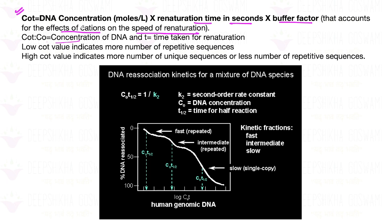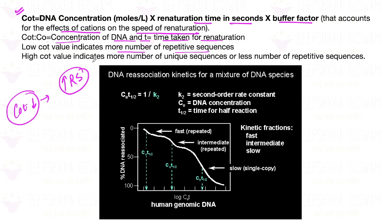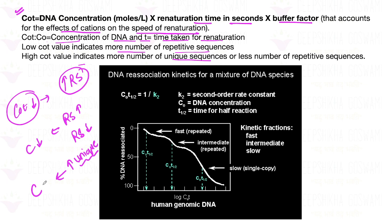Cot stands for: C0 = concentration of DNA, and T = time taken for re-naturation. A low Cot value indicates more repetitive sequences — meaning if the Cot value is less, there are more repetitive sequences. Conversely, a high Cot value indicates more unique sequences. If repetitive sequences are fewer, then unique sequences dominate, and the Cot value will be high.